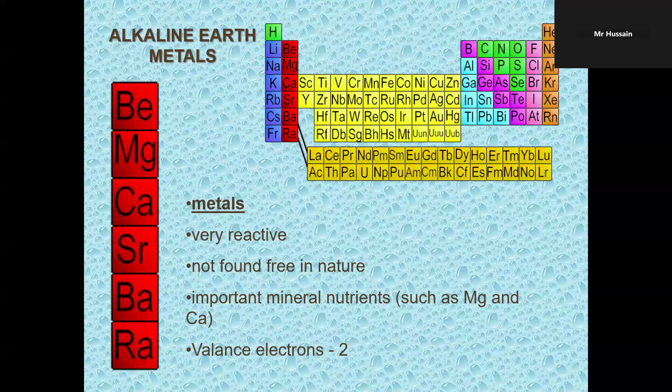This is group two. These elements or this family is called alkaline earth metals. Very reactive, but less reactive than group one. Not found free in nature, and very important part of minerals. They have two valence electrons.